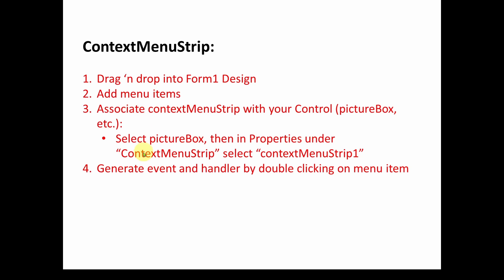Then we're going to have to generate an event. So for example, if I select an item from the context menu strip and left-click on it, it needs to generate an event to go do something. We generate an event handler by double-clicking on the menu item — just like any other event, you double-click on the control and generate an event. So basically those four steps: drag and drop, add the menu items, associate with the control, and generate events.